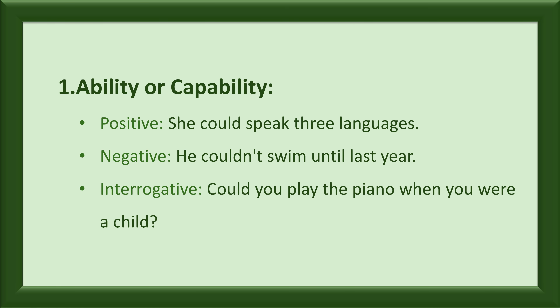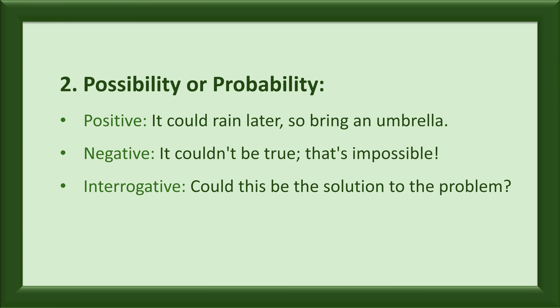1. Ability or capability. Positive: She could speak three languages. Negative: He couldn't swim until last year. Interrogative: Could you play the piano when you were a child? 2. Possibility or probability. Positive: It could rain later, so bring an umbrella. Negative: It couldn't be true, that's impossible. Interrogative: Could this be the solution to the problem?